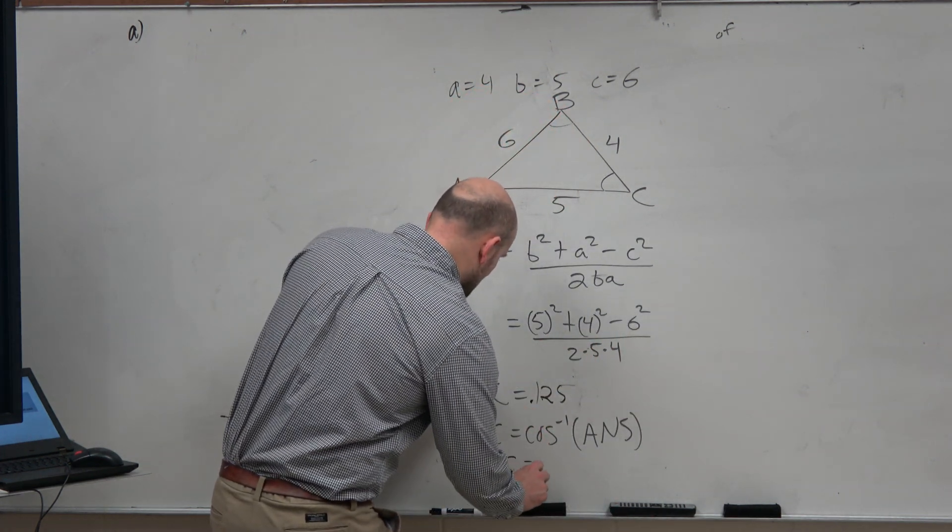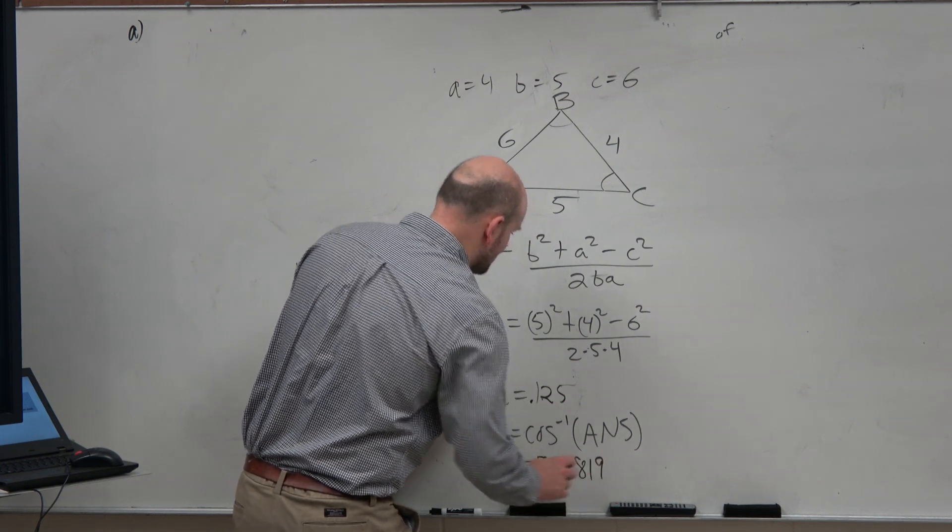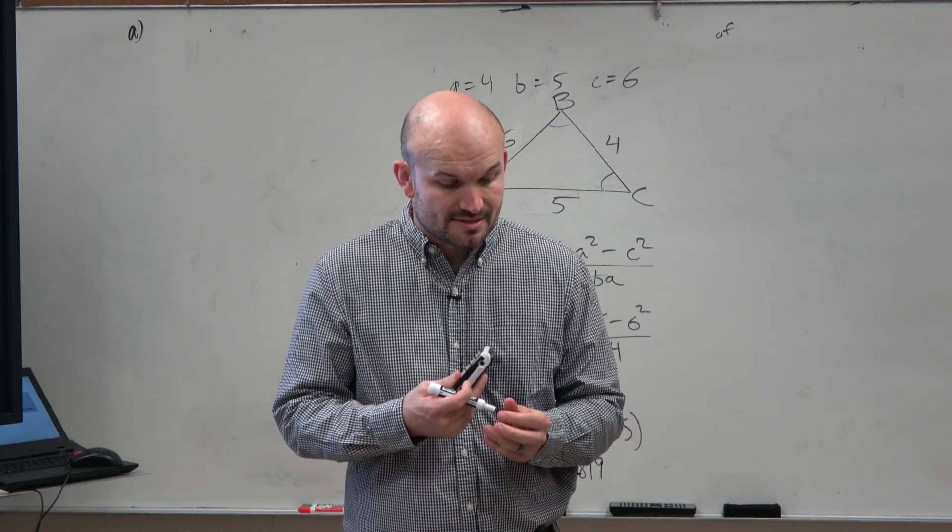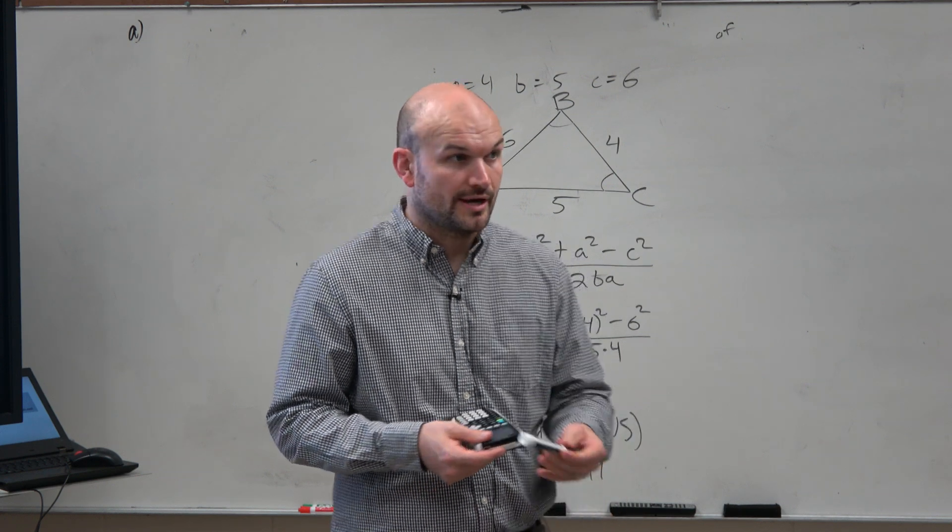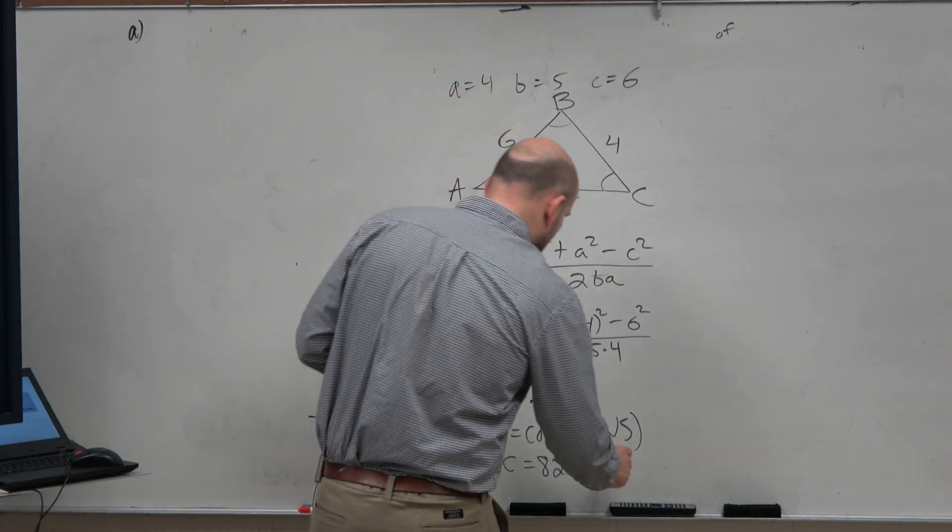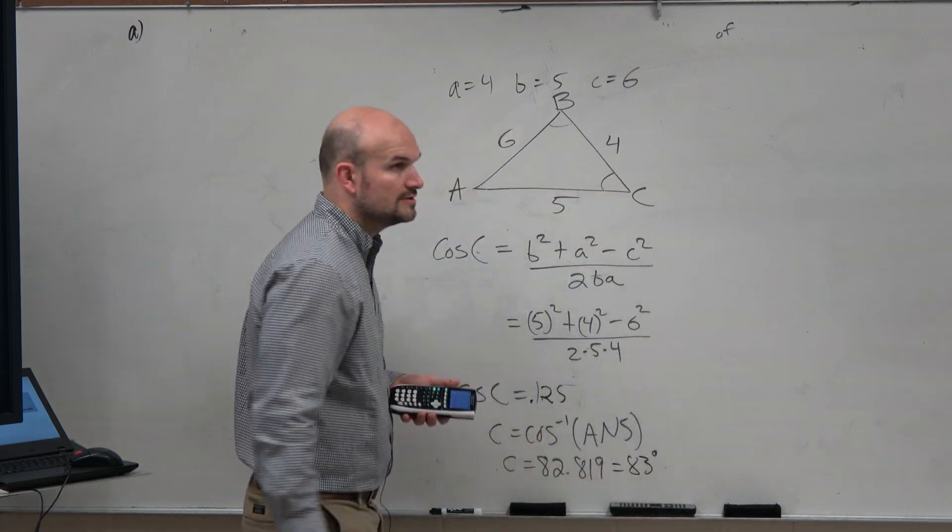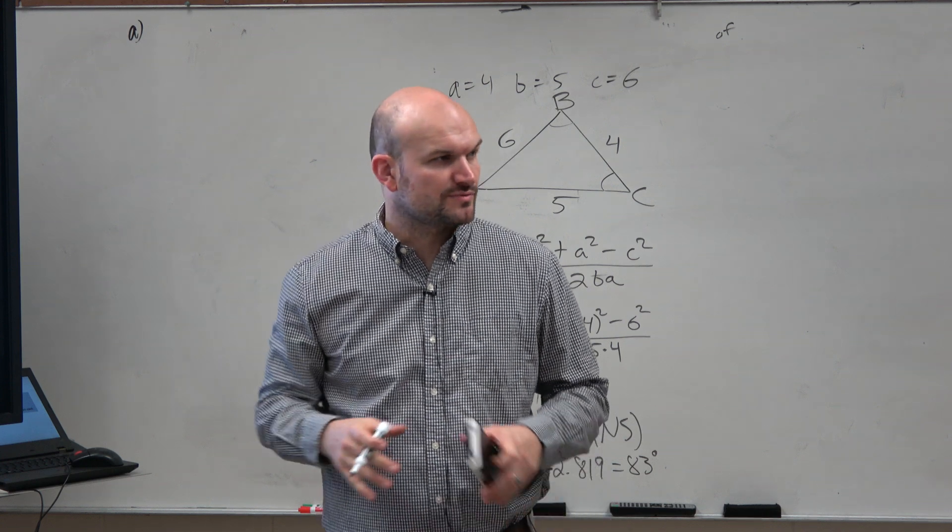So in this case, my C is equal to 82.819. Now, for this class, I'm going to have you guys round your angles to the nearest whole. So we can round our angle to the nearest whole, which would be 83 degrees. So remember, I said all other values round to the nearest thousandth. For angles, we'll just round to the nearest whole.